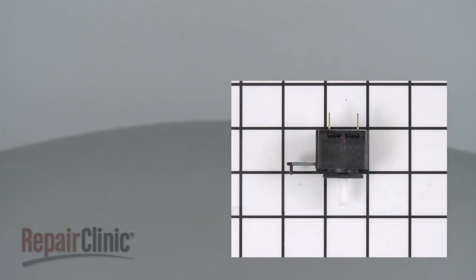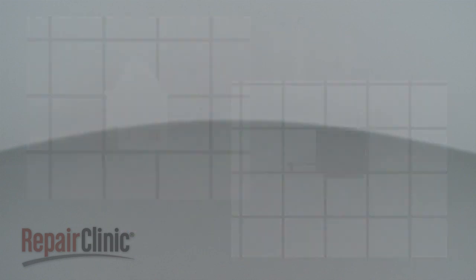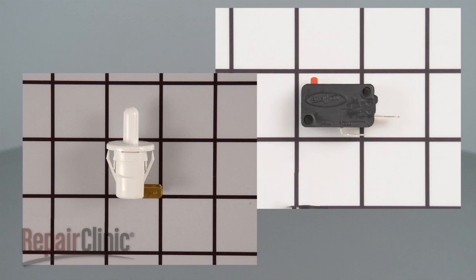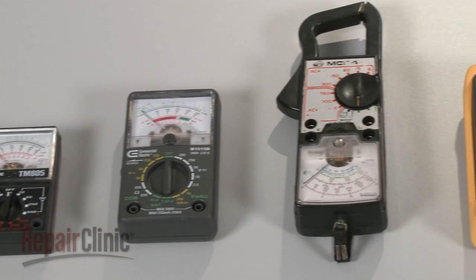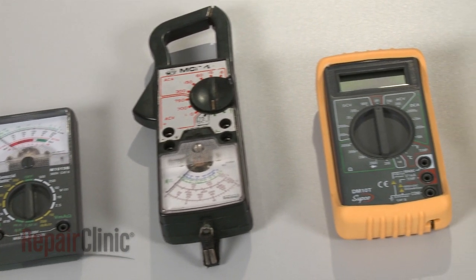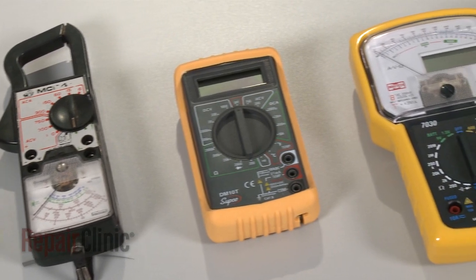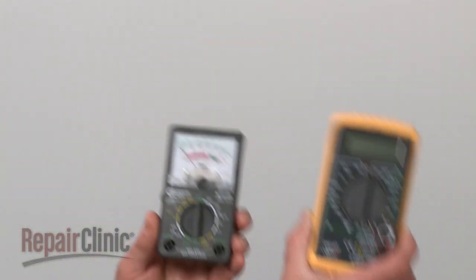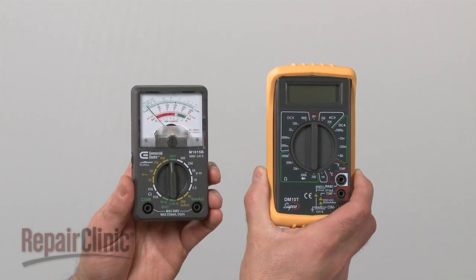Switches come in many shapes and sizes, but all of them can be tested for continuity. You can choose from a variety of multimeters to perform the test. For this demonstration, we will use both analog and digital models.